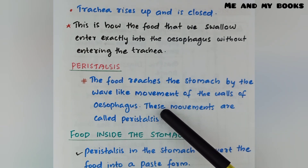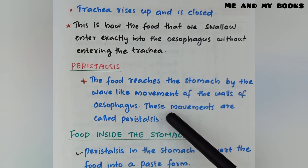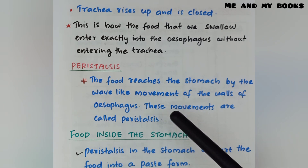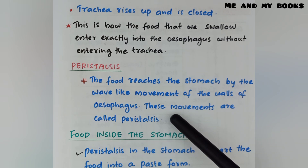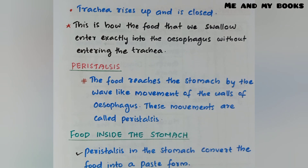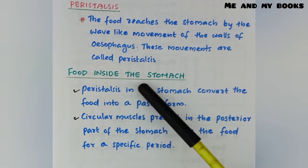What is peristalsis? Food reaches the stomach by the wave-like movement of the walls of the esophagus. These movements are called peristalsis. The esophagus moves in a wave-like manner, allowing food to travel from the mouth to the stomach.